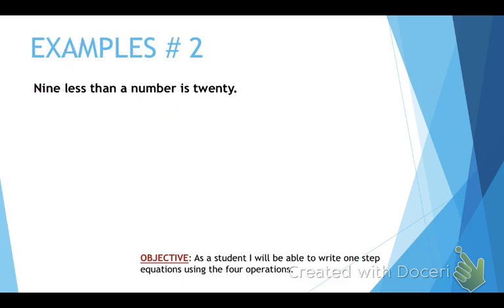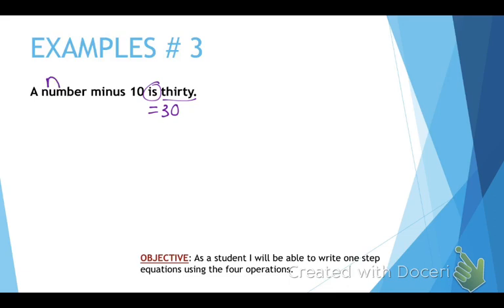Example number three. A number minus 10 is 30. Once again, we found the word is. That means equal. It's equal to what? 30. A number. Well, what's a number? We don't know. So we're going to use a variable. n minus, well, that means minus 10. That's just n minus 10 equals 30. You could even solve it if you wanted to, but you don't need to. We're just writing them this time.